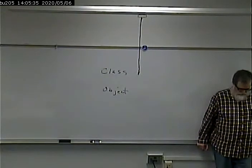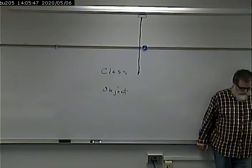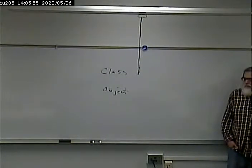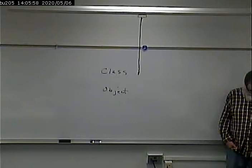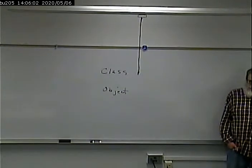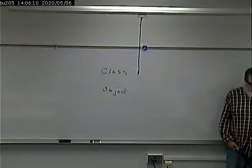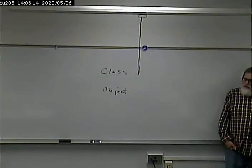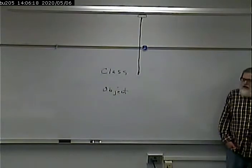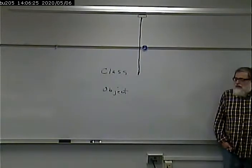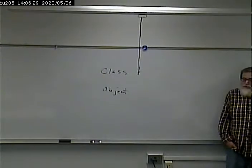A class is a kind of description of a kind of object — its attributes and its methods. An object would be an instance of that class, meaning one of those. For example, the class would be 'dog' — you have the attributes about a dog and the things you might do with a dog. If you were talking about my dog specifically, that would be an object. So the class is the generic container for all the attributes and behaviors for a given category of things.